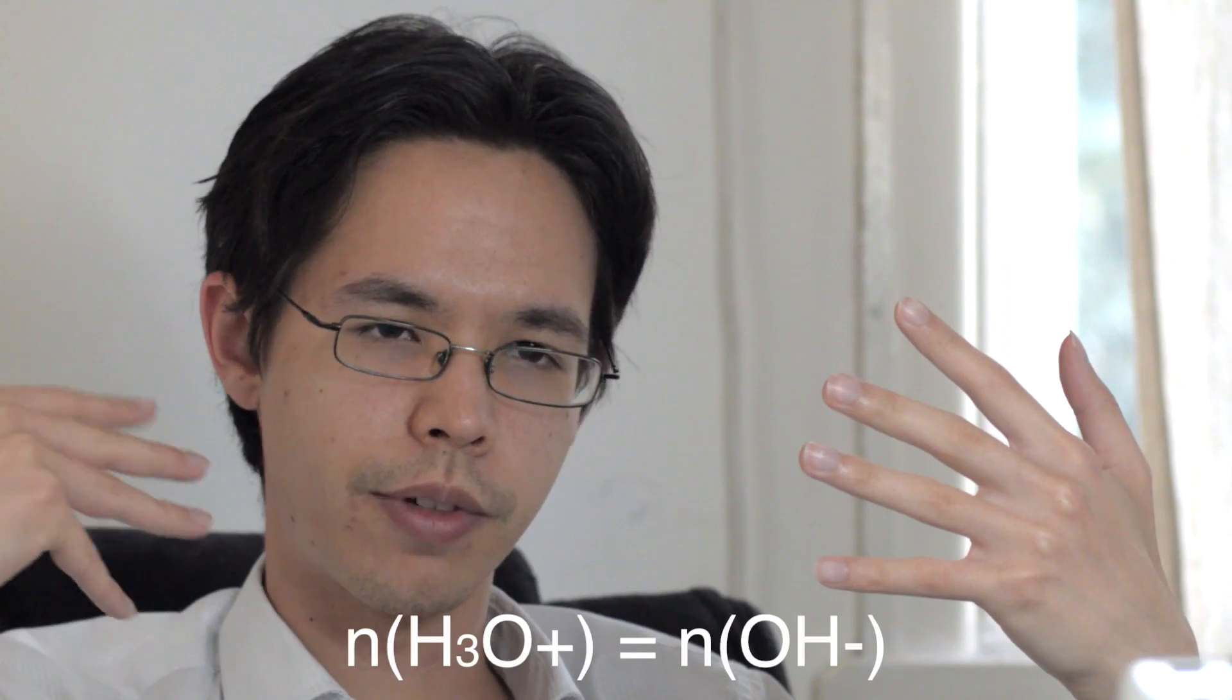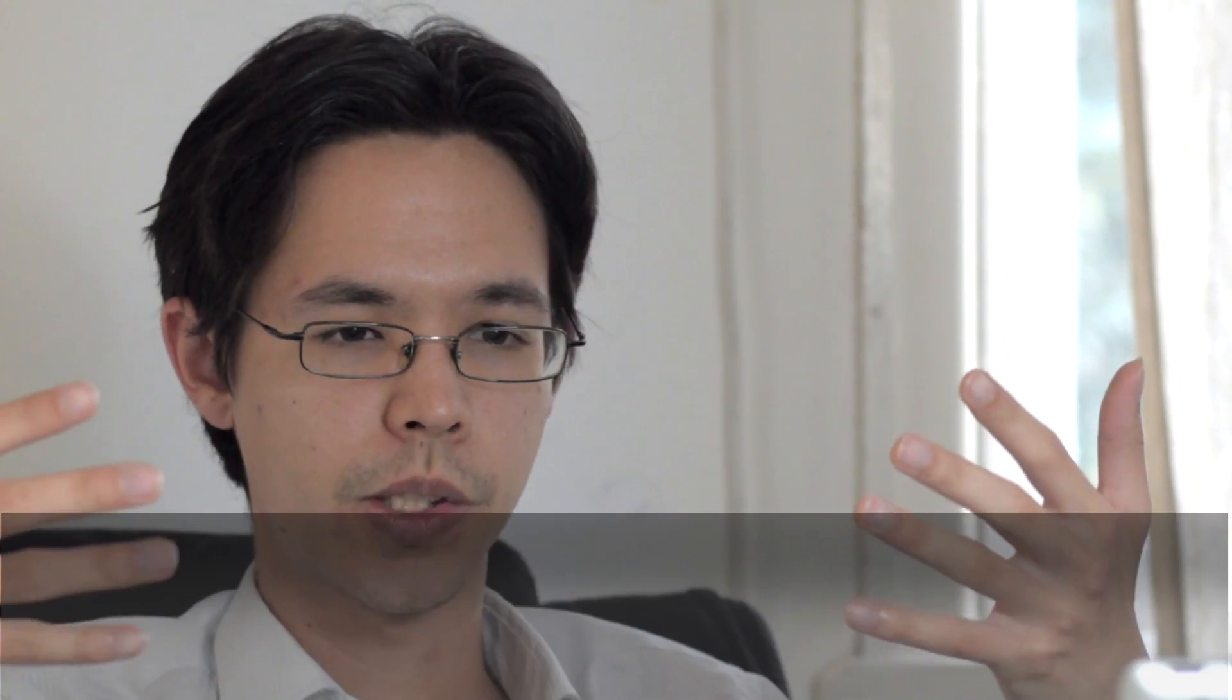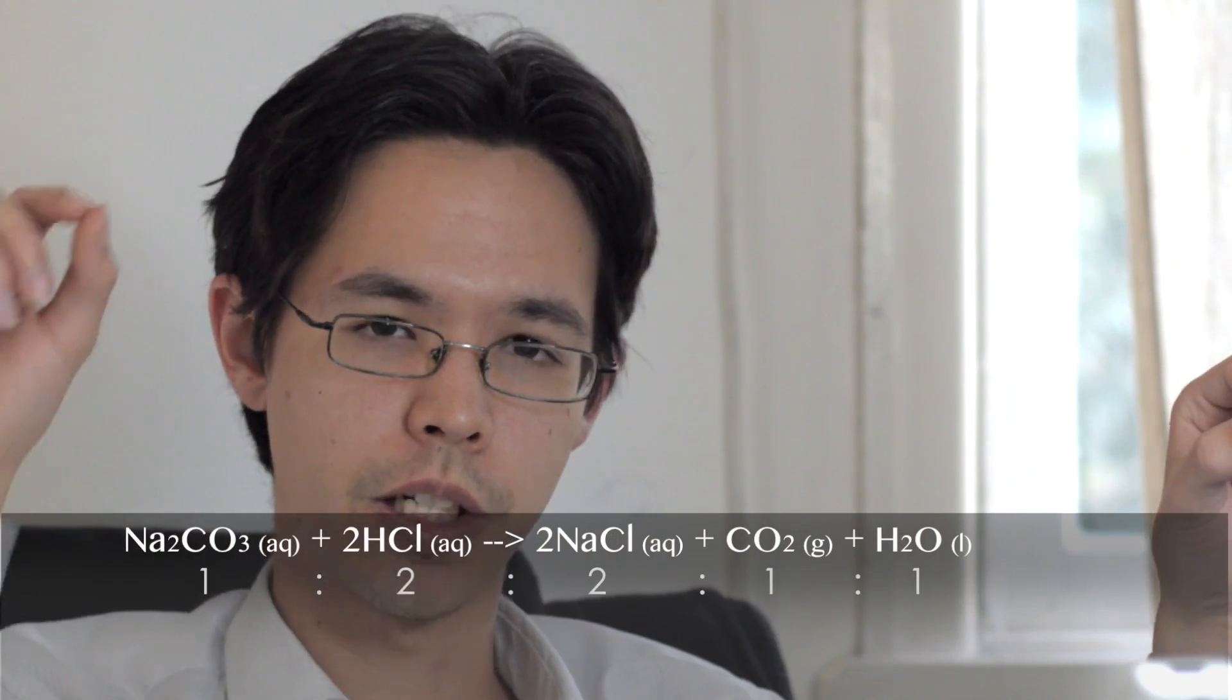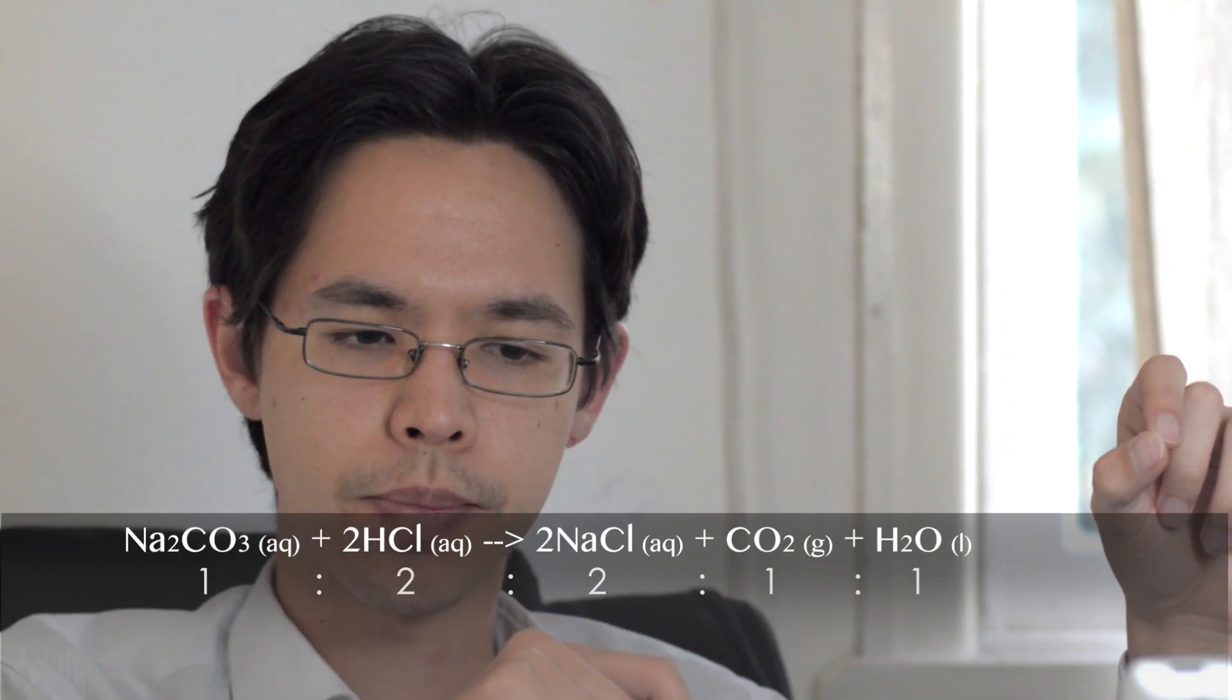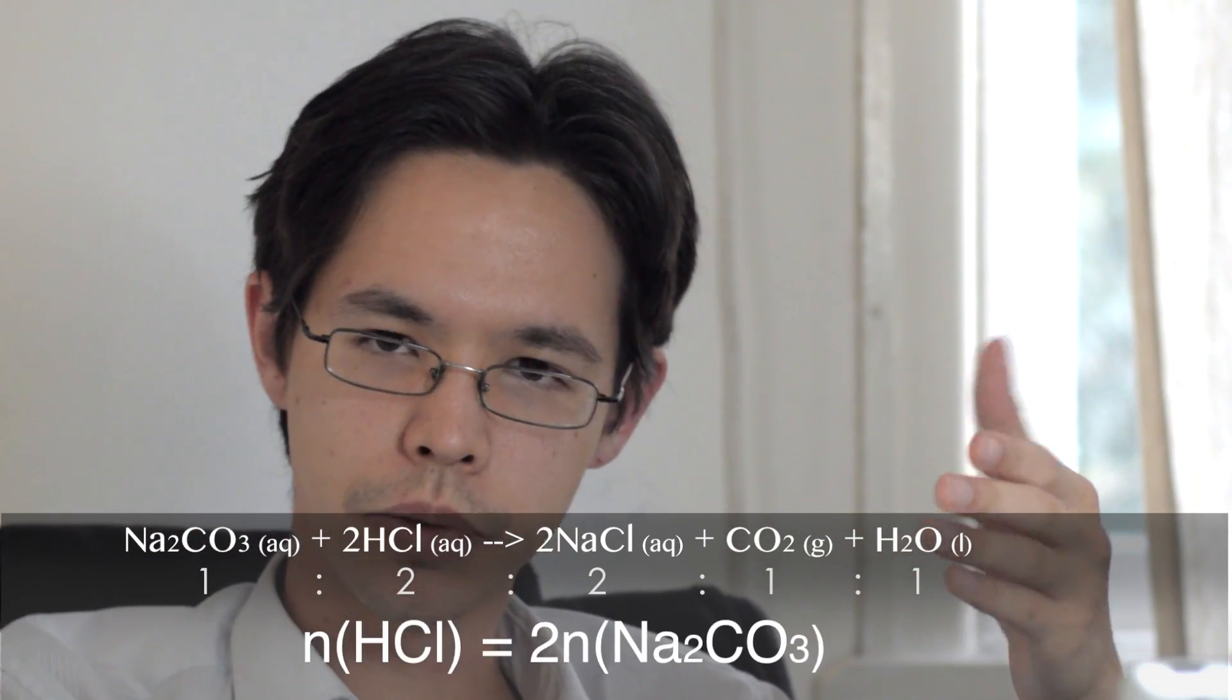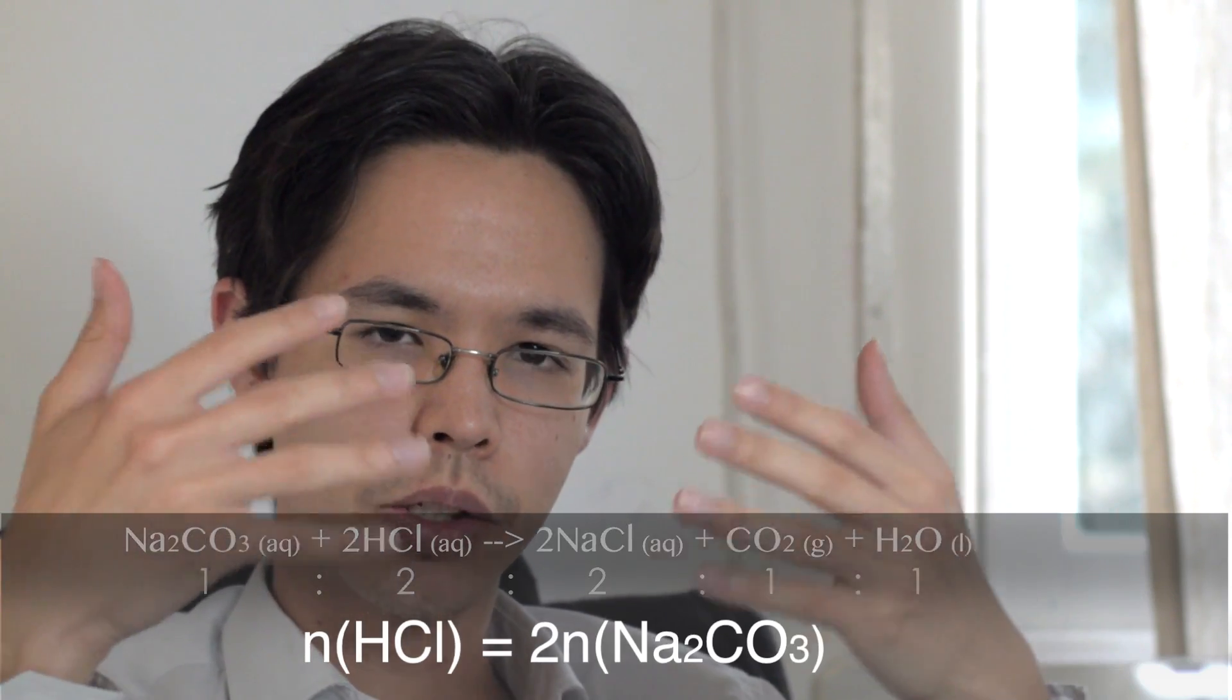The equivalence point is the point where the moles of acid is equal to the right number of moles of base. So when you do your chemical equation, you'll find a molar ratio between your ingredients, between your reactants and products. That's the establishing point. So if you've got the right moles to moles of your ingredients, then that will be your equivalence point. The end point is when the indicator changes color.